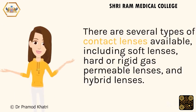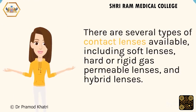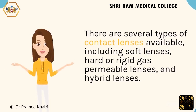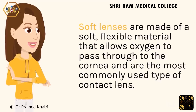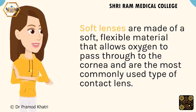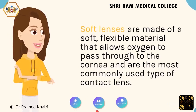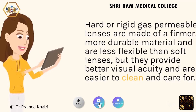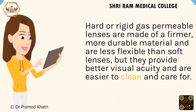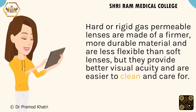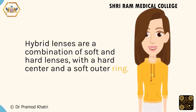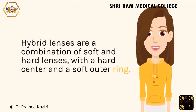There are several types of contact lenses available, including soft lenses, hard or rigid gas permeable lenses, and hybrid lenses. Soft lenses are made of a soft, flexible material that allows oxygen to pass through to the cornea and are the most commonly used type. Hard or rigid gas permeable lenses are made of a firmer, more durable material, less flexible than soft lenses, but they provide better visual acuity and are easier to clean and care for. Hybrid lenses are a combination of soft and hard lenses, with a hard center and a soft outer ring.